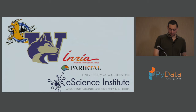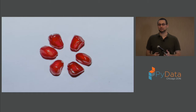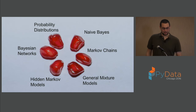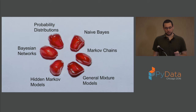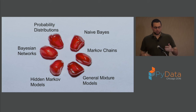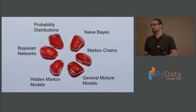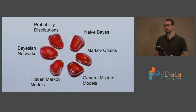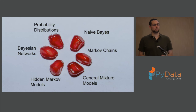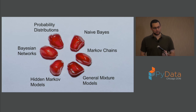There are six main things to talk about — like pomegranate seeds: basic probability distributions, naive Bayes, Markov chains, general mixture models, hidden Markov models, and Bayesian networks. All of these are still probabilistic models. A general mixture model is still a distribution, albeit more complicated. A Bayesian network is literally a distribution factored along a graphical structure. Because of this, Pomegranate supports a great deal of model stacking.